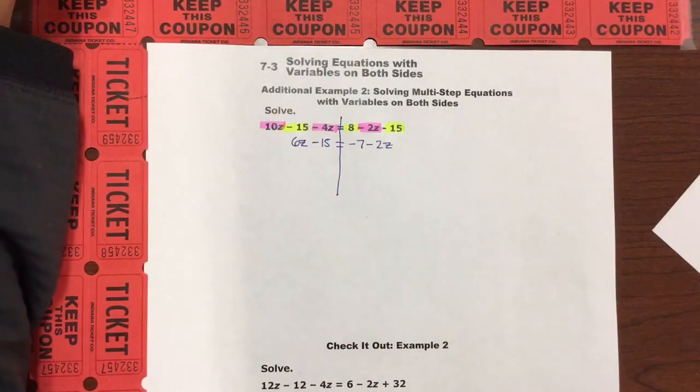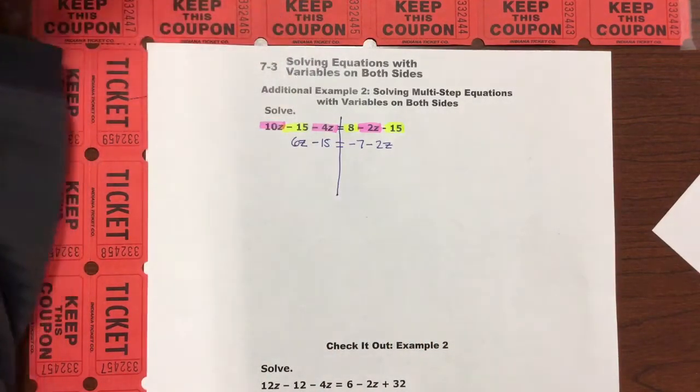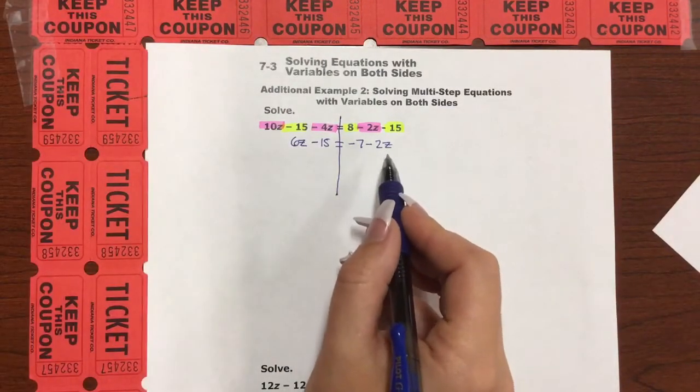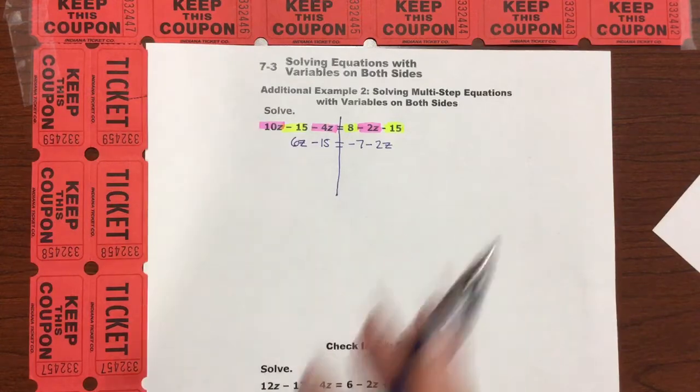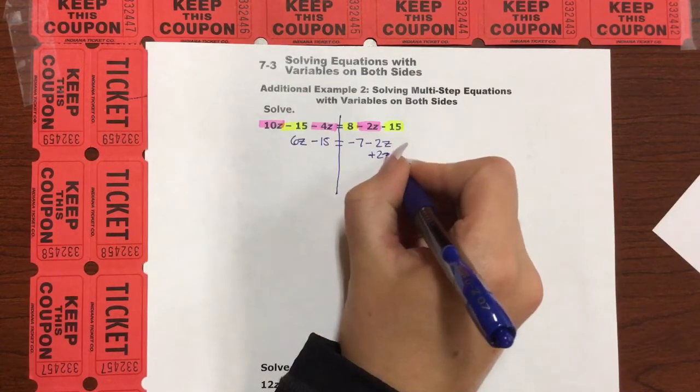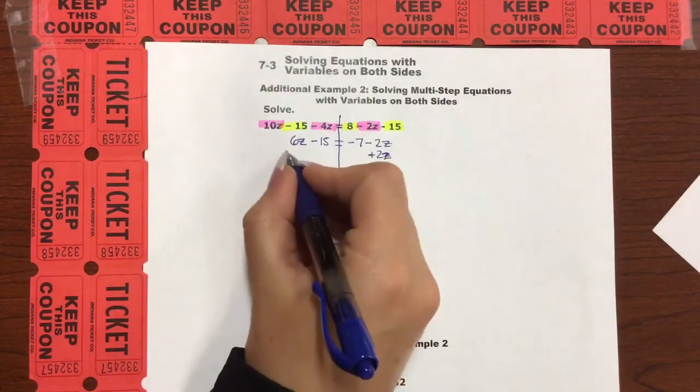We can get the variables on the same side. So to do that, we're going to move the smaller one. We have 6z, and we have a negative 2z. Which one's smaller? I would say negative 2z. So we're going to do the opposite of negative 2z, which would be a positive 2z, to both sides.